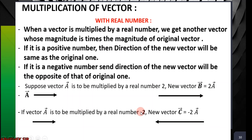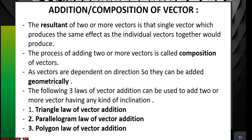If vector A is multiplied by minus 2, a new vector C equals minus 2A — the length becomes twice, but due to the negative sign, the arrow points in the opposite direction. This is how we geometrically understand the significance of the sign in vector multiplication.